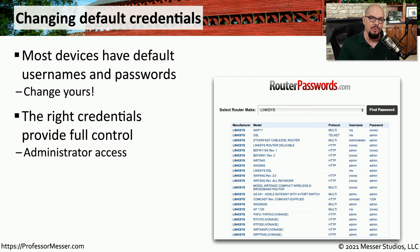If you look at the configuration of a switch, you would find that all access ports — which are all devices that are not trunk interfaces — are assigned to a specific VLAN. This means a user connecting on that physical interface on the switch will be added to the VLAN associated with that port.